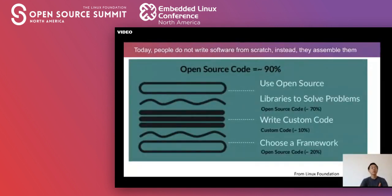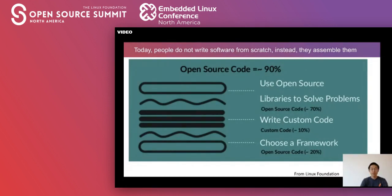Why? Because today, people don't write software from scratch. Instead, they assemble them. Here's one picture from Linux Foundation. It says that in today's modern software, we use 90% of code in open source code. Here's one example. Engineers start with an open source framework, and you can see that the customer code is only 10%. The 90% are open source code.